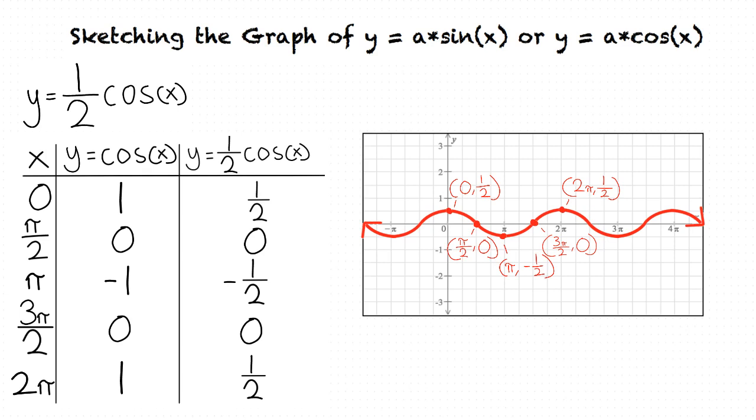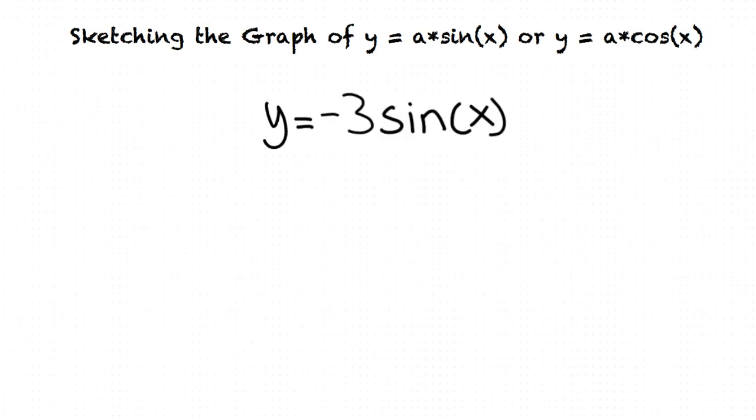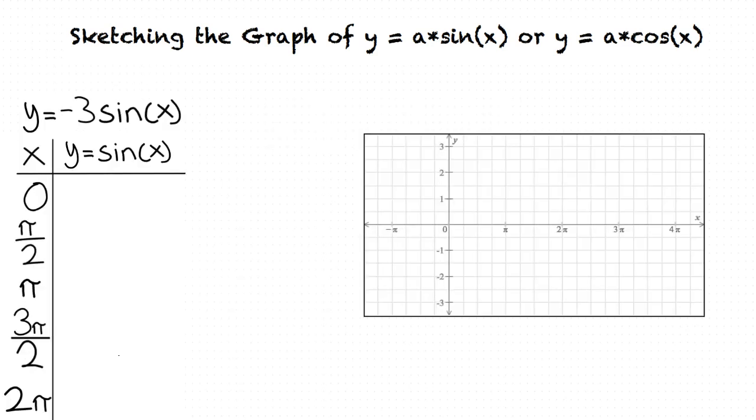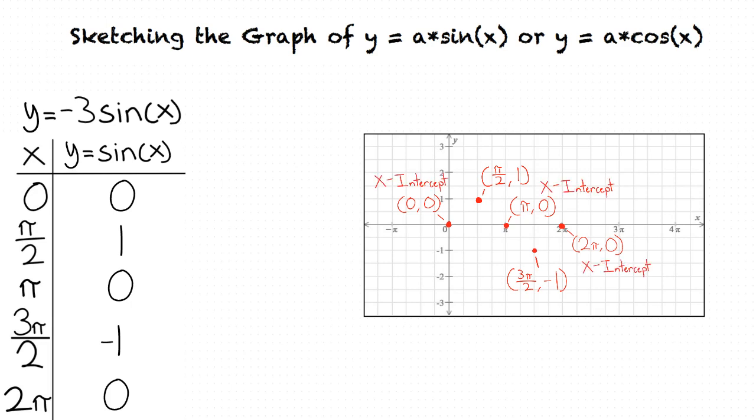For this example, we will graph the sine equation y equals negative three times sine of x. We first insert our key points into the equation y equals sine of x. This results in our y values of zero, one, zero, negative one, and zero. Notice that the major difference between a sine and cosine equation is the placement of the x-intercepts, minima, and maxima.